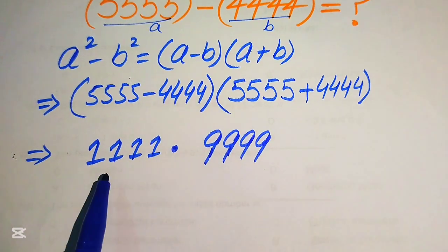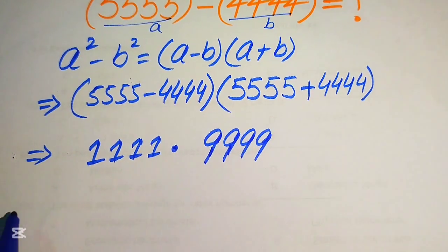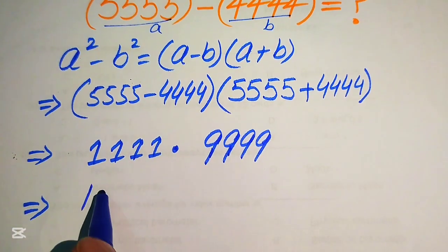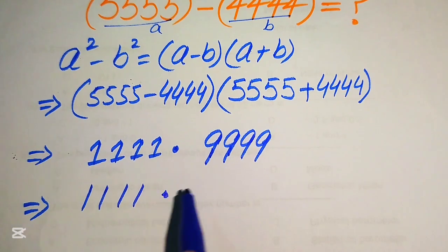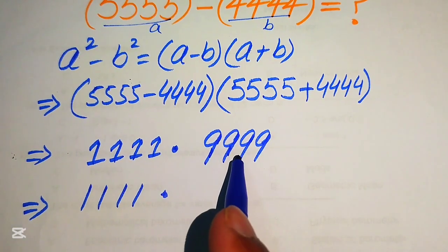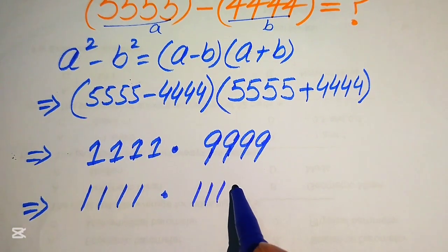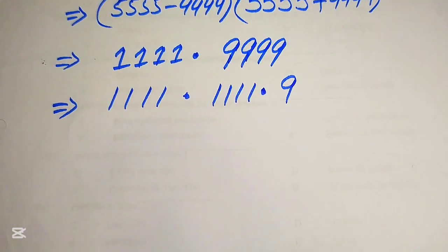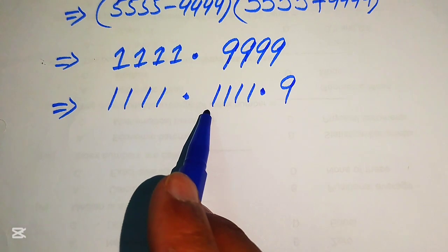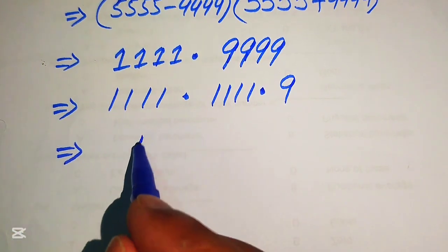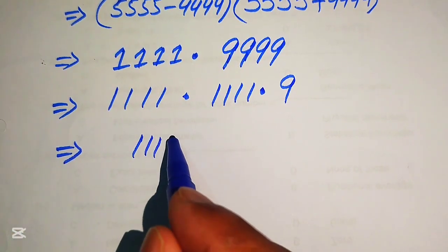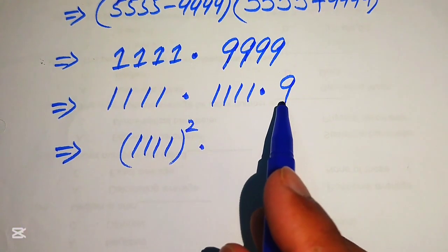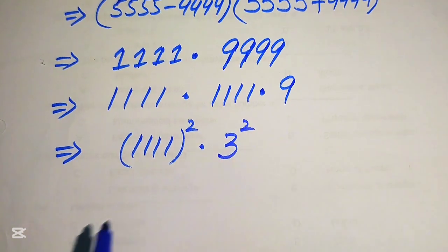Now we need to multiply 1111 by 9999. We break 9999 and write it as 1111 multiplied by 9. We then write 9 as 3 squared, giving us 1111 times 1111 times 3 squared.